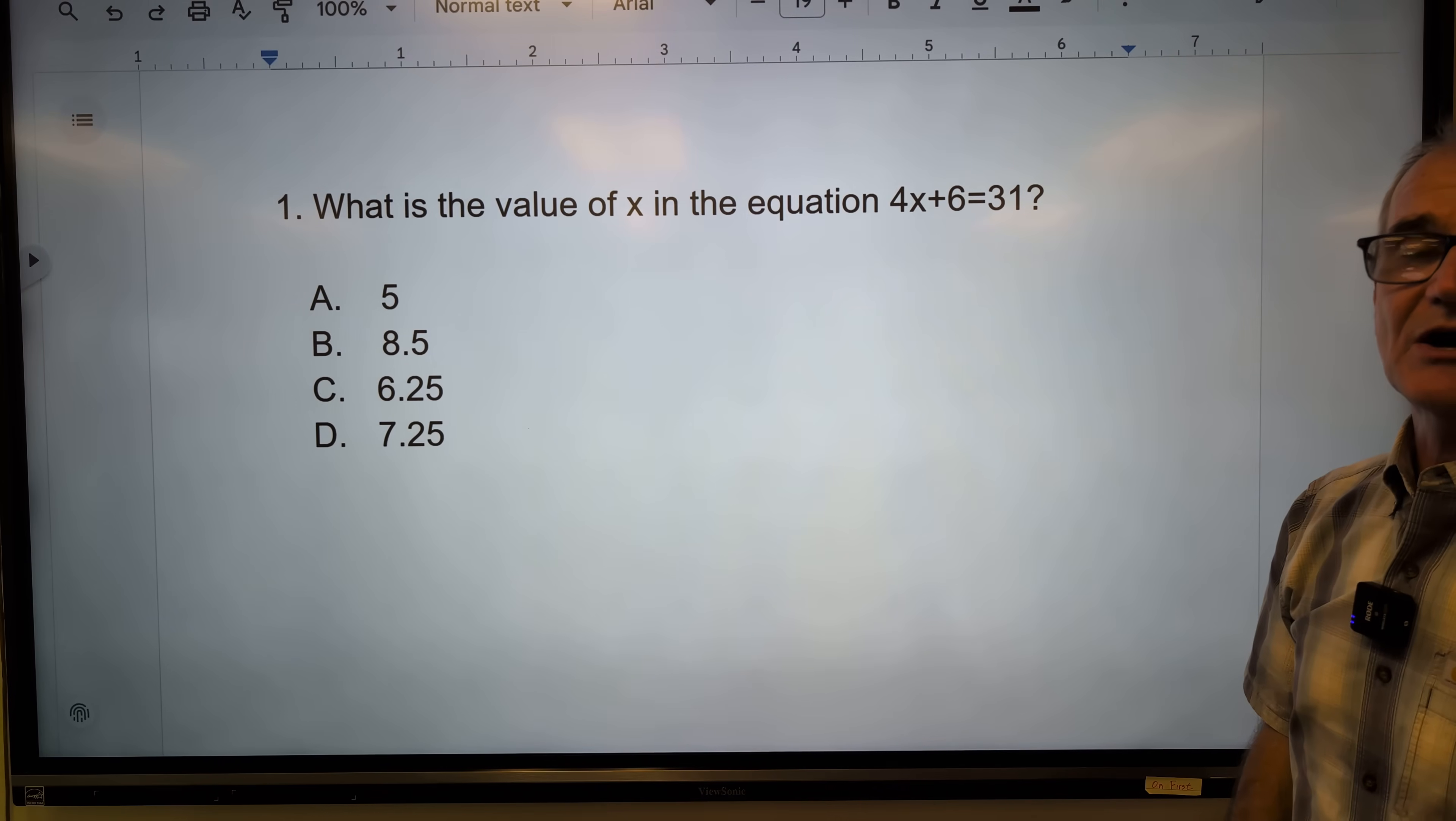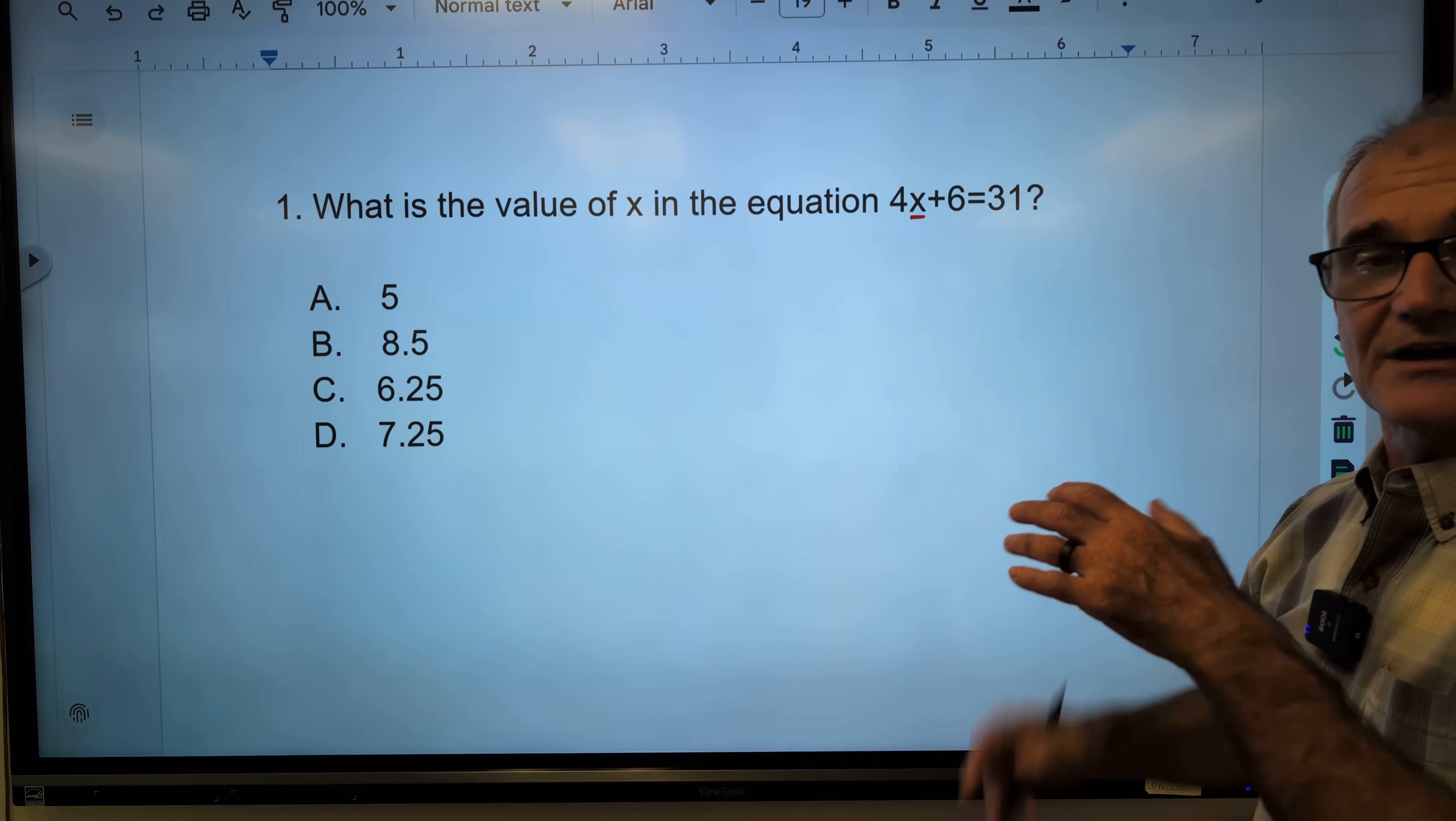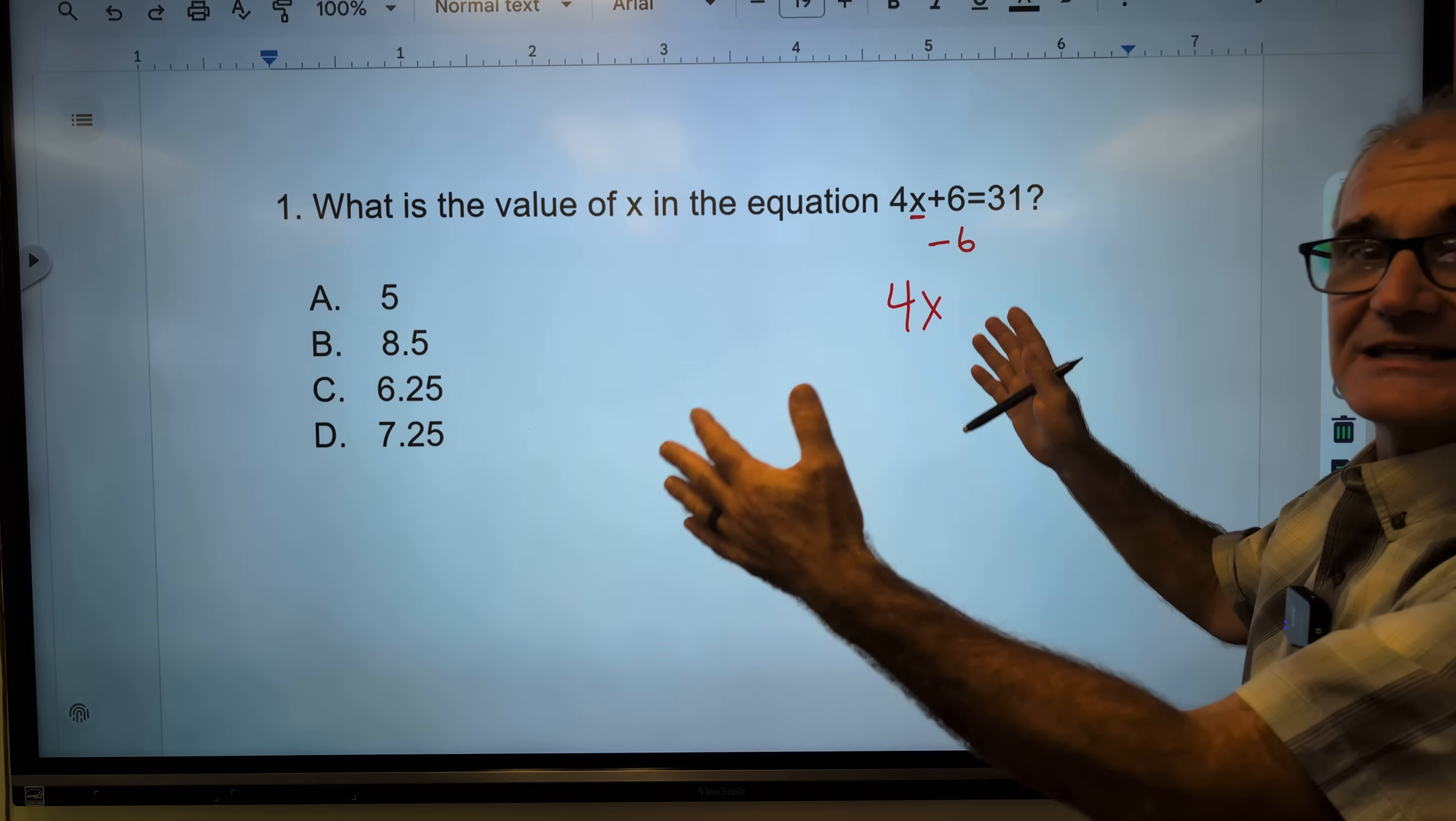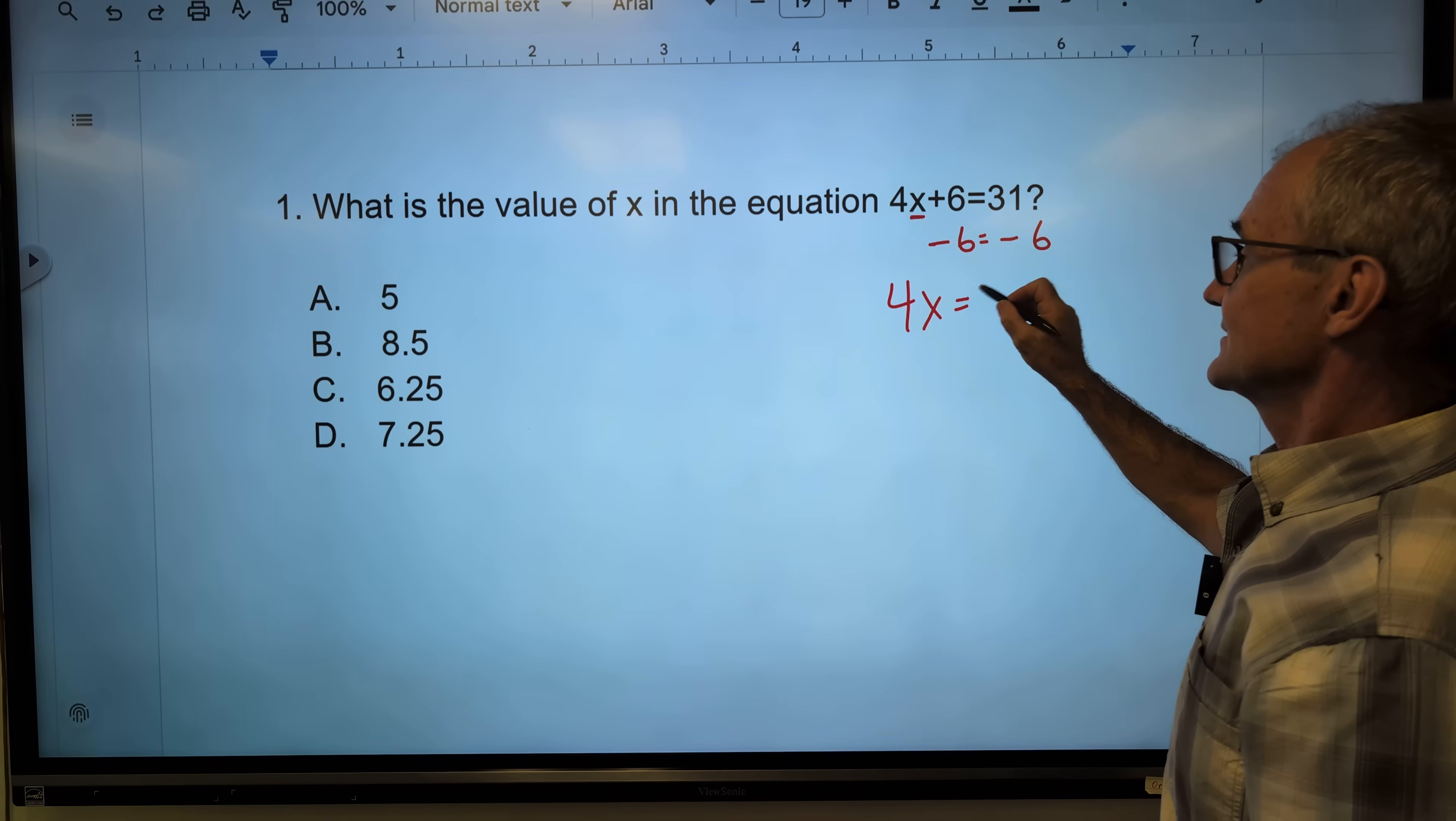We'll start right here, solving for X. Pause the video, do the problem, unpause the video, watch how I solve it. What we're doing here is solving for X - that means we have to get that X, a variable, all by itself. First thing I need to do is subtract 6 from it. That's going to give me 4X. I can do whatever I want to an equation as long as I keep it in balance. How I keep it in balance is I do the same thing to both sides. So I also have to subtract 6 from that 31. 31 minus 6 is 25.